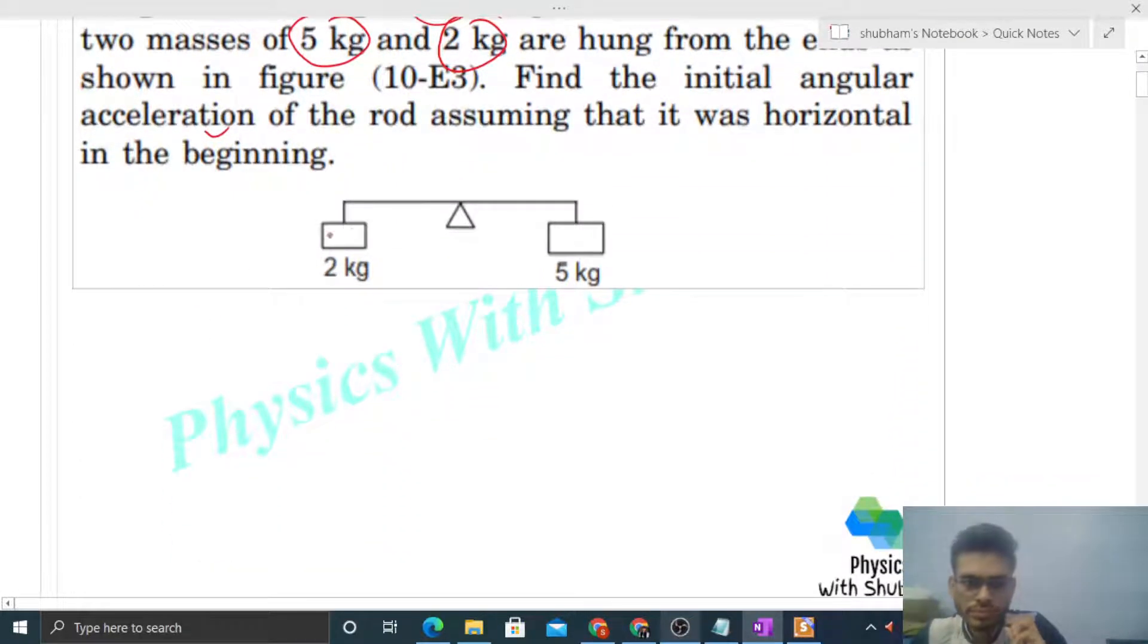So this is the diagram here: 2 kilogram block here, 5 kilogram block here. The rod is length 1 meter which is pivoted at its center. This side is 0.5 meter and this side is 0.5 meter. The rod is massless, with negligible mass. We have to find initially what will be the angular acceleration of the rod.